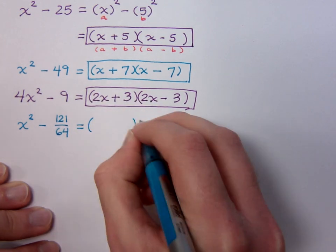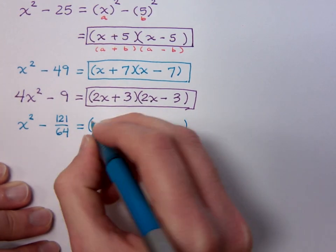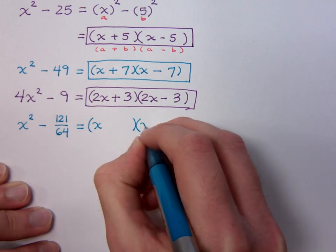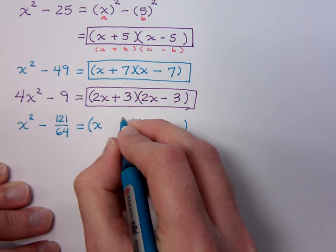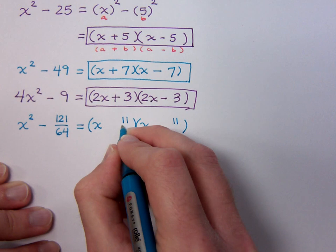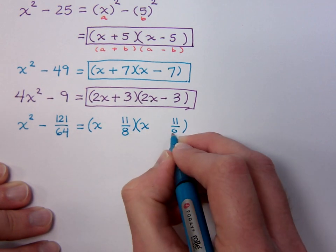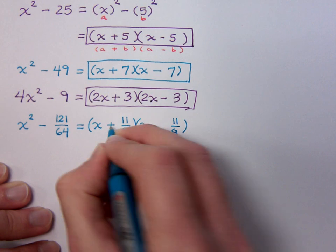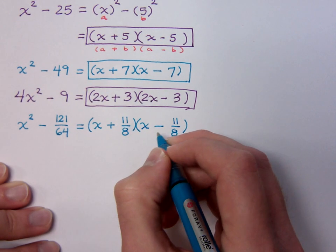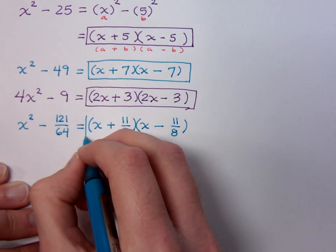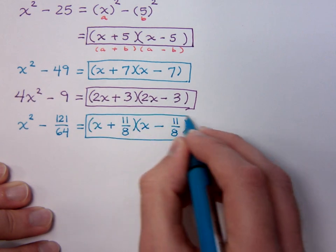So when I factor this, I'm going to take that into account. x² becomes x and x. 121 becomes 11 and 11. The 64 is the denominator, so over 8 and over 8. One plus and one minus.